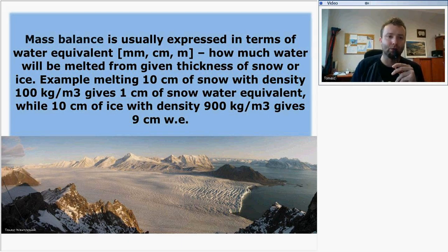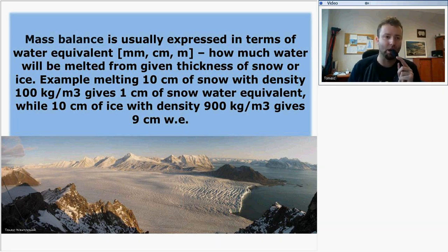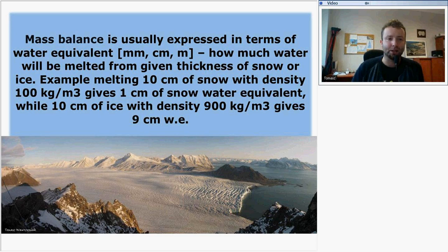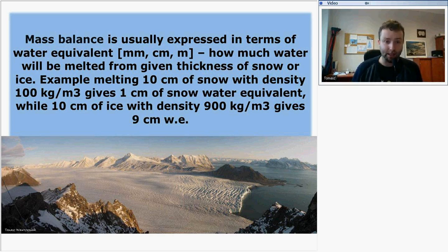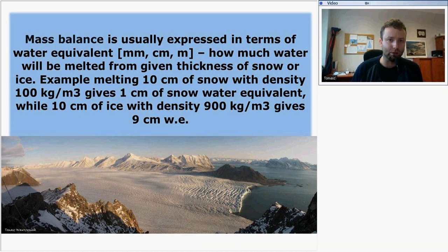The net balance is expressed in terms of water equivalent — how much water would be melted from a given thickness of snow or ice. For example, 10 cm of snow with a density of 100 kg per cubic meter would give 1 cm of snow water equivalent, while 10 cm of ice with a density of 900 kg per cubic meter would give 9 cm of water equivalent.